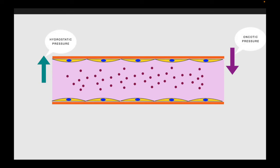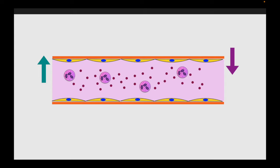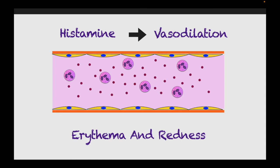Normally blood flows with proteins and neutrophils in the central axial column. When there is acute inflammation, the first mediator triggered is histamine, which causes relaxation of vascular smooth muscles resulting in vasodilation. This causes redness and swelling. Vasodilation leads to slowing of blood flow, causing vascular stasis and congestion — more RBCs are seen in the blood vessels due to slow movement, giving rise to the redness discoloration of the overlying skin.